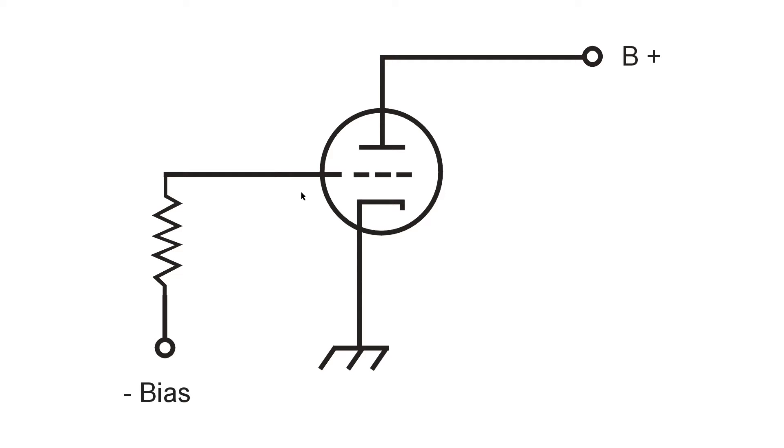It is the negative voltage that you apply to the grid of a vacuum tube in order to obtain the proper amplification characteristics, or the desired amplification characteristics.